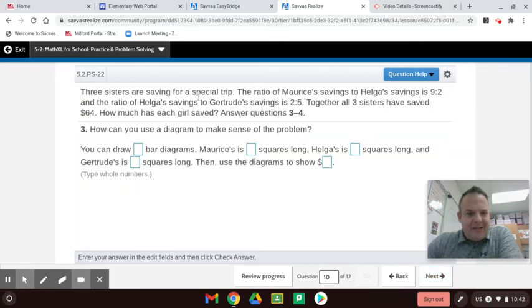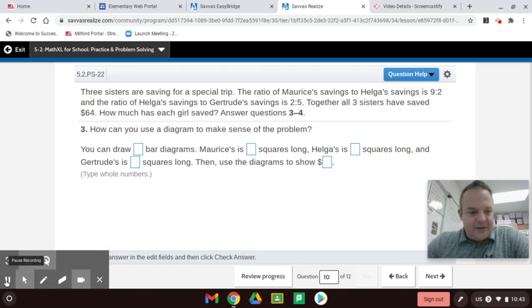Three sisters are saving for a special trip. The ratio of Marcees' savings to Helga's savings is 9 to 2, and the ratio of Helga's savings to Gertrude's savings is 2 to 5. Together, all three sisters have saved $64. How much has each girl saved? Oh, wow. So how can you use a diagram to make this problem make sense? So we can make bars. I guess I'm going to pause this right here and get back.